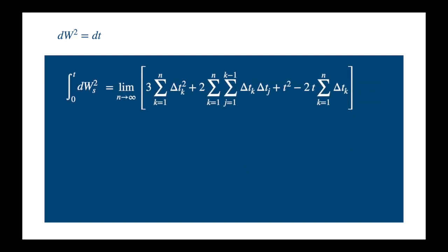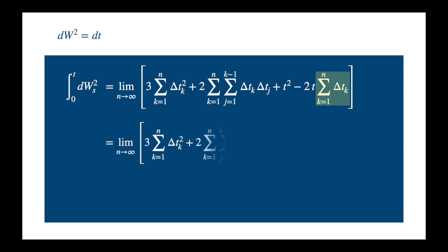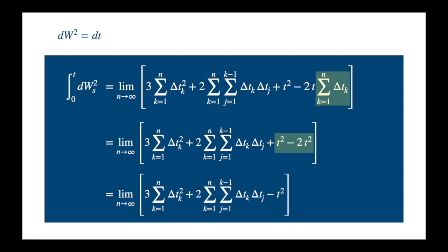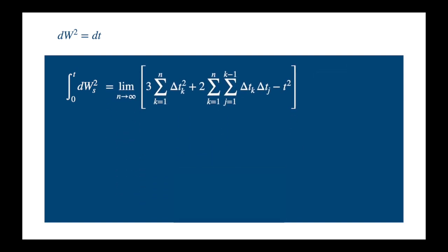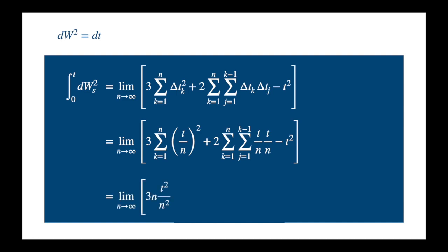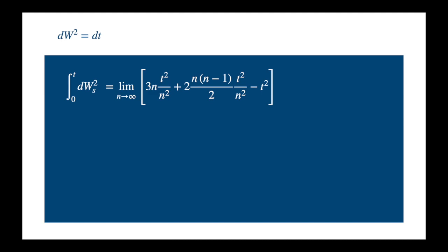Now the sum of subintervals of t is equal to t of course, and we can combine the t squared terms, and we know delta t equals t divided by n. Now the first sum amounts to adding the t divided by n square term n times, and then the second amounts to summing the same term, n times n minus 1, divided by 2 times, remember the number of handshakes. Now we can simplify the n's.